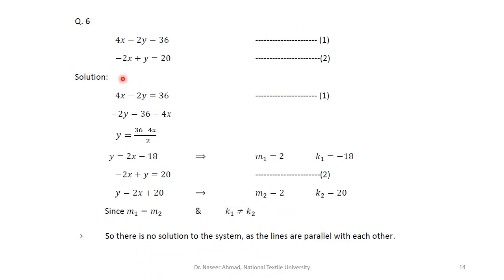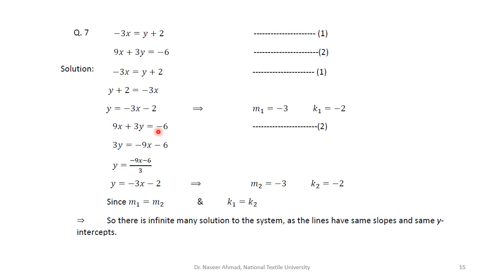For question 6, writing both equations in slope-intercept form gives y equals 2x minus 18. The slope m1 equals 2 and y-intercept k1 equals minus 18. For equation 2, m2 equals 2 and k2 equals 20. The slopes are equal but the intercepts are different, so there is no solution.